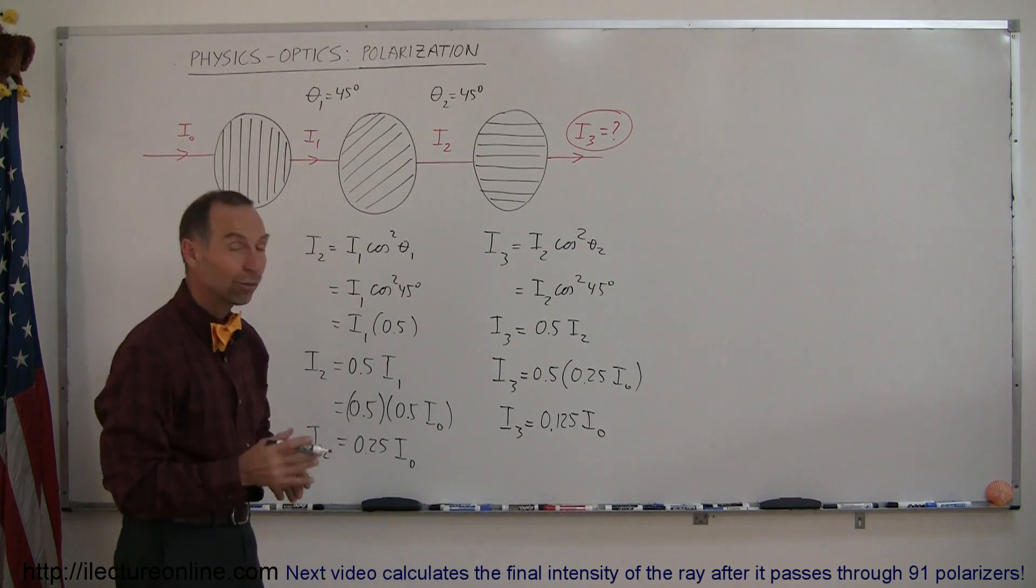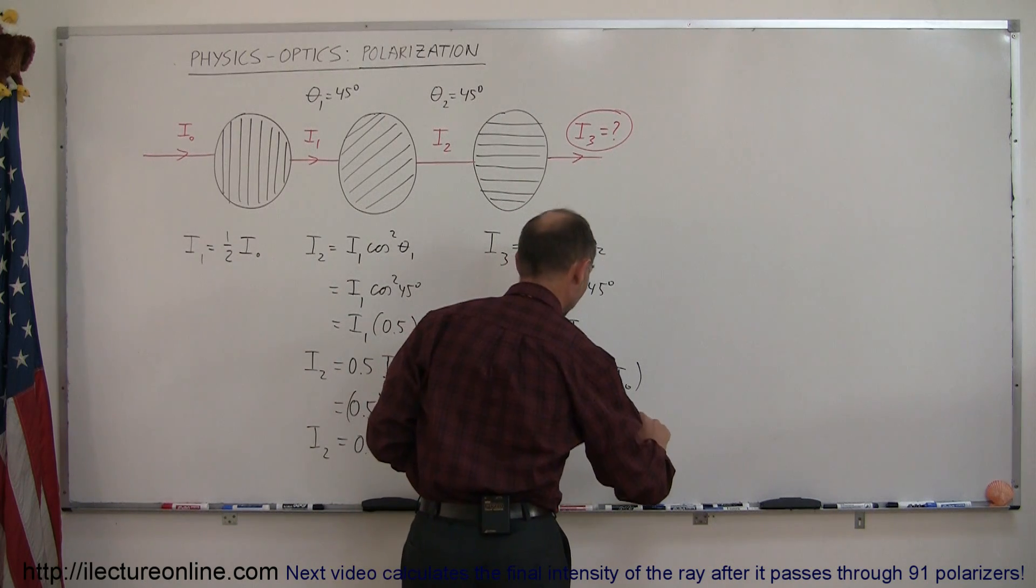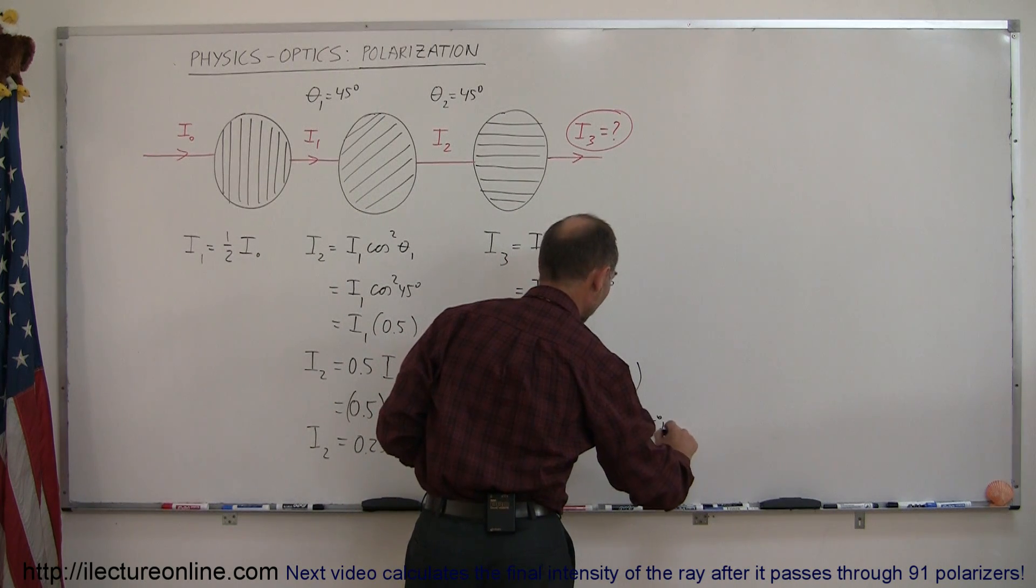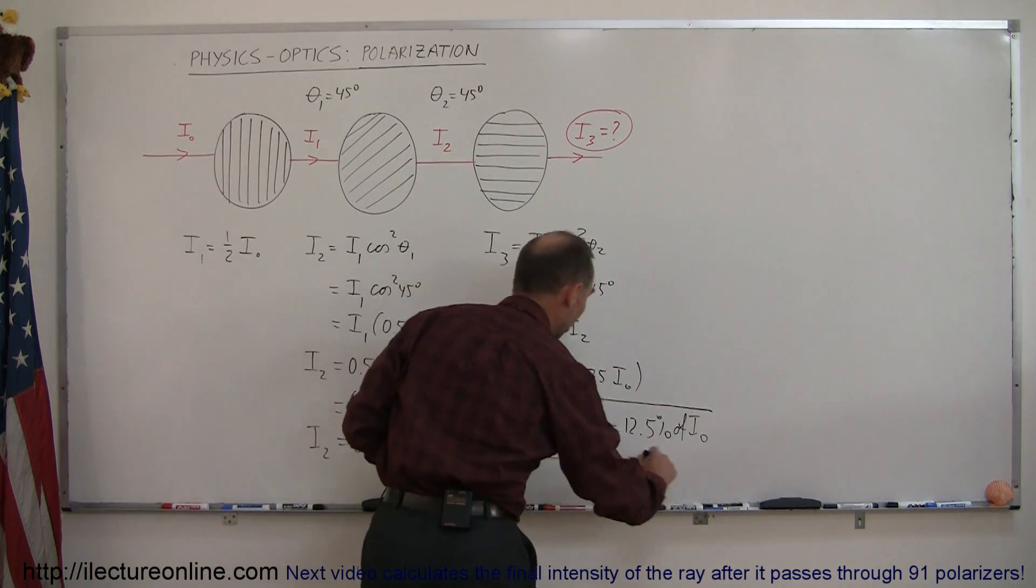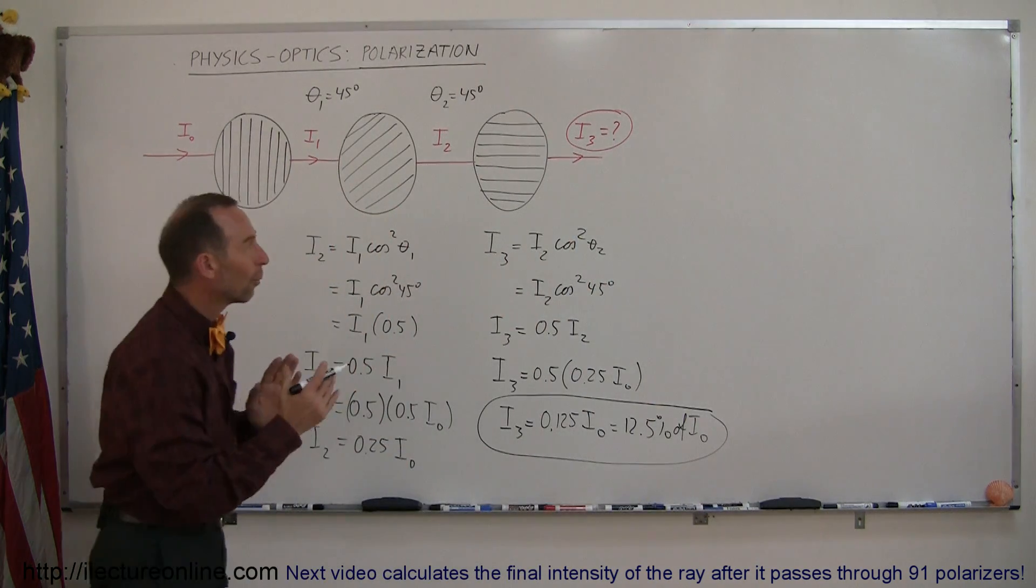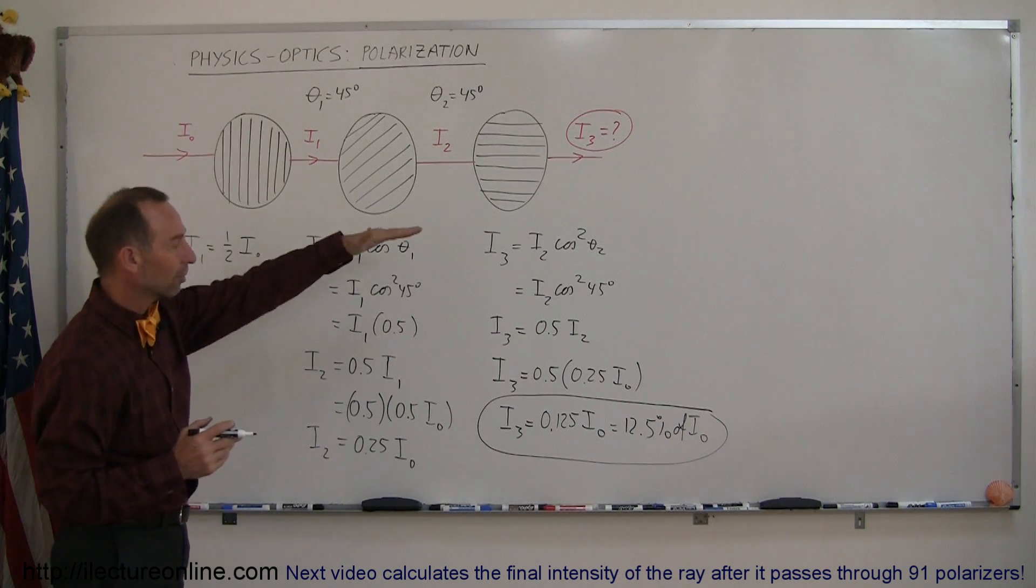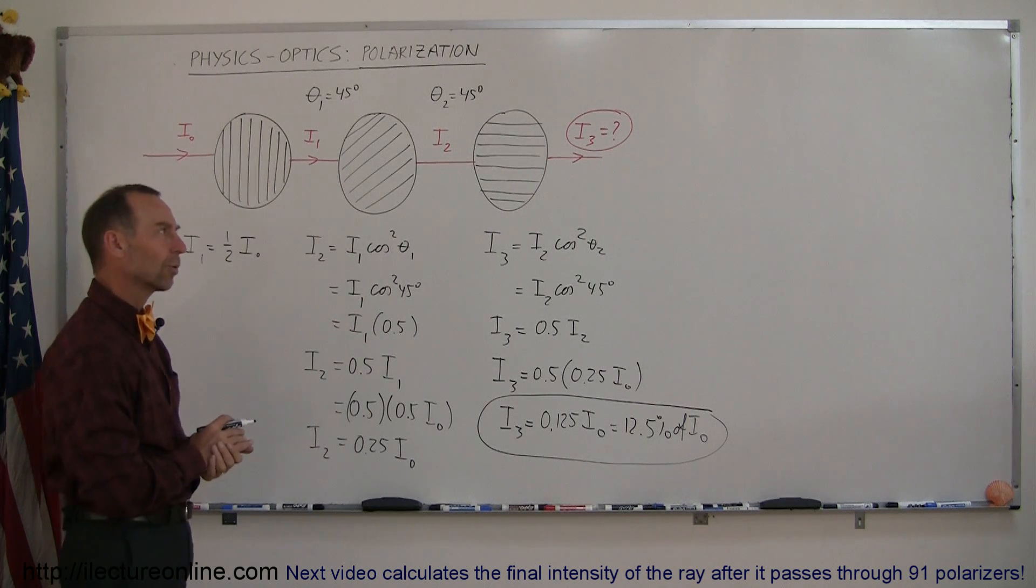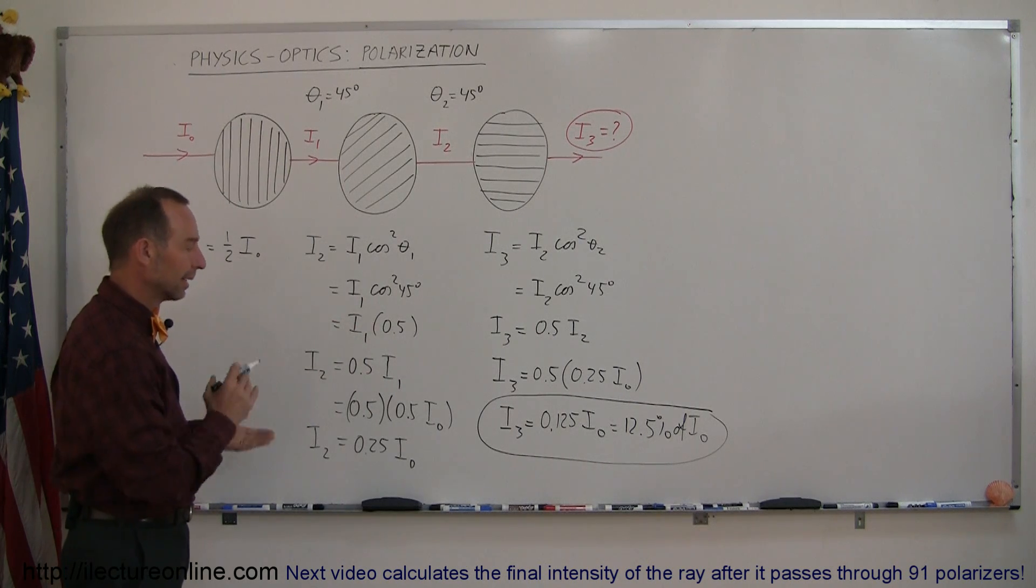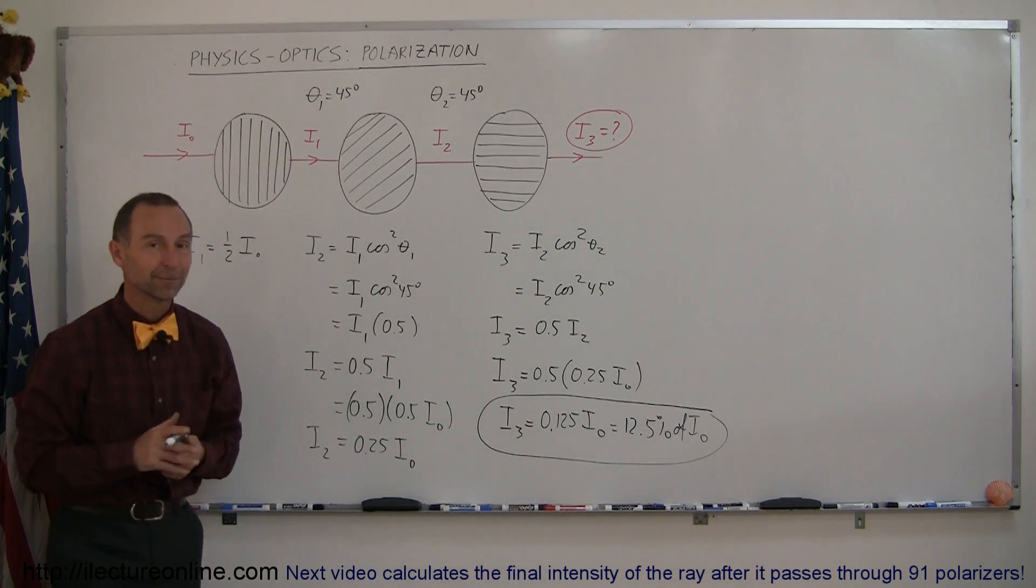Not zero, but 12.5% of its original intensity. This is equal to 12.5% of I₀. So when we put more than two polarizers one behind each other, you can then see that the intensity of the light going to the last polarizer is not zero but something bigger than zero, which is quite interesting. And that's how you do a problem like that. I have one more example if you want to stay tuned for that one.